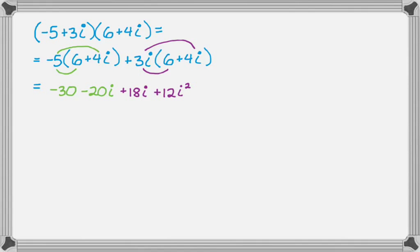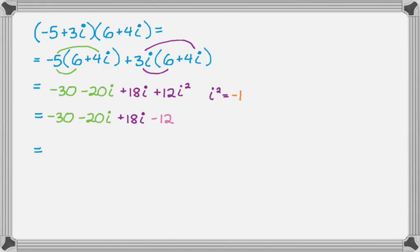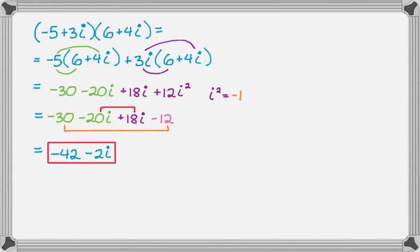There's that i squared again — it comes up a lot when multiplying complex numbers. Recopying: negative 30, then minus 20i plus 18i, and since i squared equals negative 1, the plus 12i squared becomes minus 12. Combine the real terms: negative 30 minus 12 is negative 42. Combine the imaginary terms: minus 20i plus 18i is minus 2i. The answer is negative 42 minus 2i.